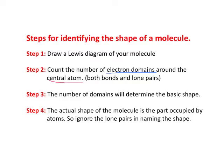Step 3: the number of these domains will then determine what we're going to call the basic shape of the molecule. Then lastly, you want to work out the actual shape of the molecule. To do that, you've got to look at the central atom and see if there are any lone pairs. If there are lone pairs, then the actual shape of the molecule will be different from its basic shape.